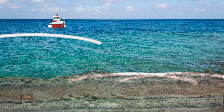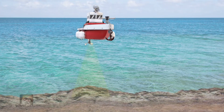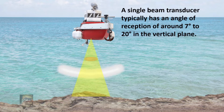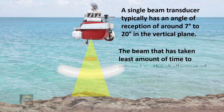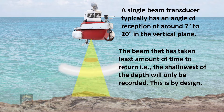The Echosounder sends a sound wave which insonifies a large area of seabed. Whichever return echo takes the least amount of time, and also falls within a specified cone, is recorded as depth. This cone is between 7 to 20 degrees in the vertical plane.